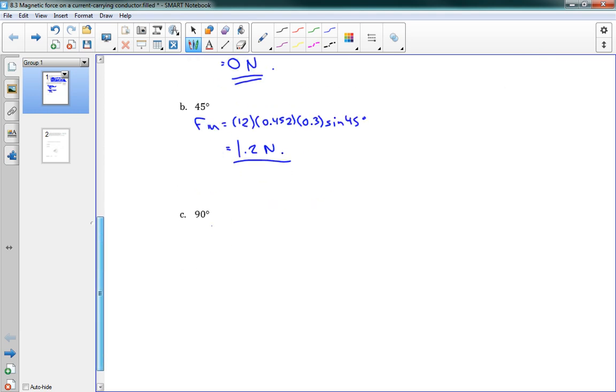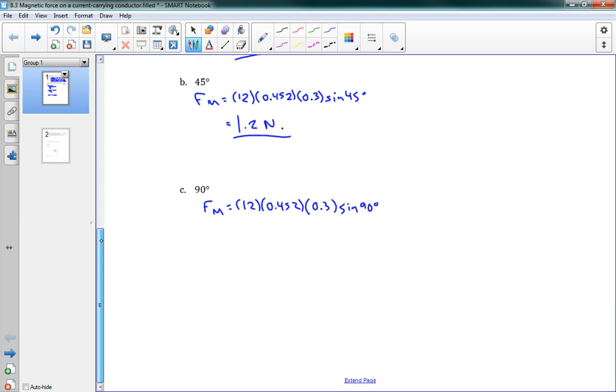And last one here. Here, 12. 0.452. 0.3. Sine, 90 degrees. And of course, sine 90 degrees, well, that's going to be 1. And that's the largest that value can be. So this makes sense, I think. When your wire is running perpendicular to the field, you're going to get the maximum force out of that. So let's see, our number here is 1.6 newtons. Those are our answers.